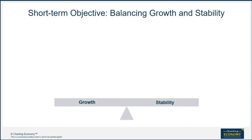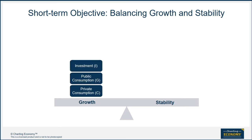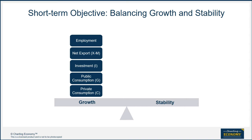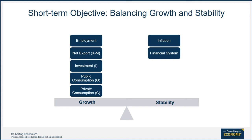The short-term objective of economic policy makers is to balance growth and stability. They can stimulate growth through these four engines on the expenditure side: private consumption, public consumption, investment, and net export. Increasing employment usually is the immediate target for short-term growth stimulus policies. On the other side, policy makers have to watch out for inflation and other macroeconomic stability issues, such as the financial system's health, fiscal health, balance of payment, and the exchange rate.